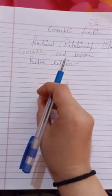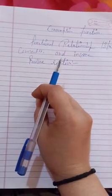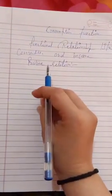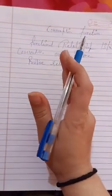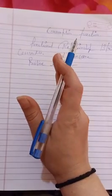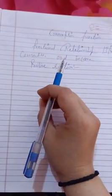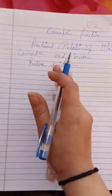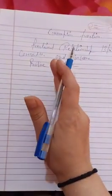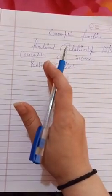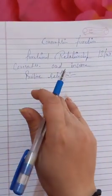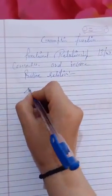One very important point: consumption can never be zero. There is always a minimum level of consumption that exists in the economy. Even a person with no earnings — even a beggar — still consumes something, as we discussed earlier.